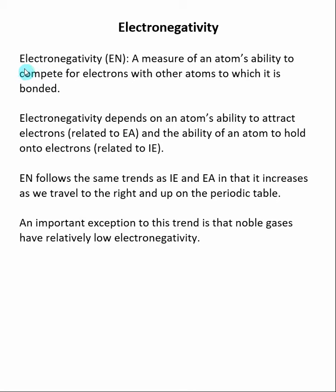The periodic trend is called electronegativity, and it's a measure of an atom's ability to compete for electrons with other atoms to which it's bonded. We're going to see in this chapter that electronegativity is a very important property in terms of bonding.